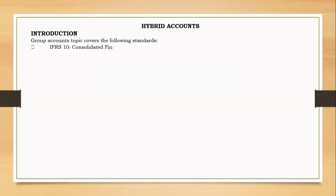First, we have IFRS 10, called Consolidated Financial Statements. If Company A has acquired shares of Company B for more than 50%, we say that you control that entity. If so, you are the parent and that entity is the subsidiary. You can combine your financial statements with the subsidiary's financial statements, and that combination is what is called a group — a combination of a parent and its subsidiary.